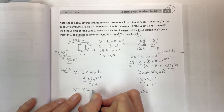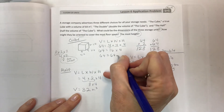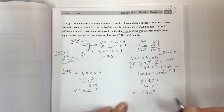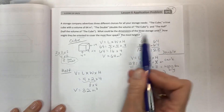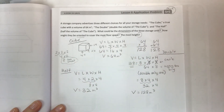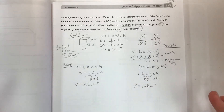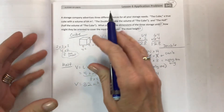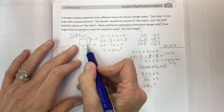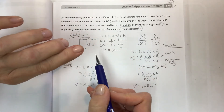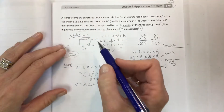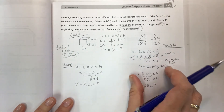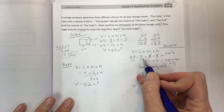When you label the dimensions of the three storage units, the volume is in meters, so it's going to be meters cubed. You can put V for volume and write meters cubed. For the cube, you don't have any orientation options — it's going to be 4×4×4 no matter how you turn it, because cubes don't change — that's one of the properties.